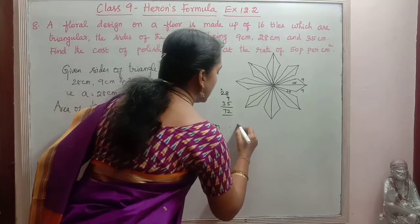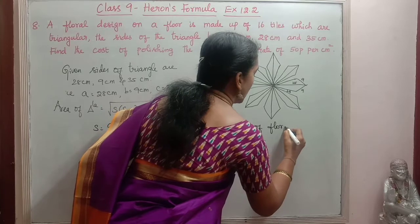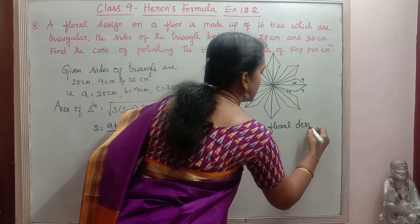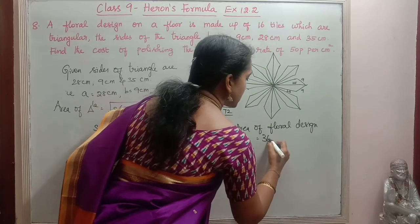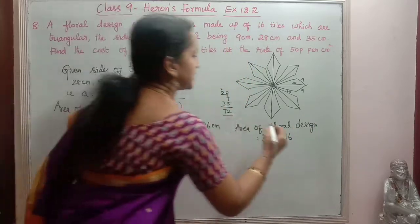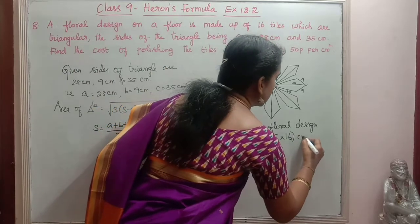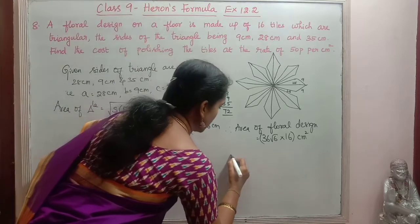Therefore, area of floral design is equal to 36 root 6 into 16. So we will keep this as it is this much centimeter square. We will keep this as it is. Now we will find the cost of polishing.